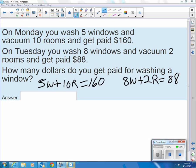2 and 8 divide evenly, 5 and 10 divide evenly, so it wouldn't really matter which side we start on. Let's just subtract 10R from each side. We do want to subtract the one with the largest coefficient. So 5 of whatever I get paid for a window is equal to $160 minus 10 of whatever I get paid for a room.